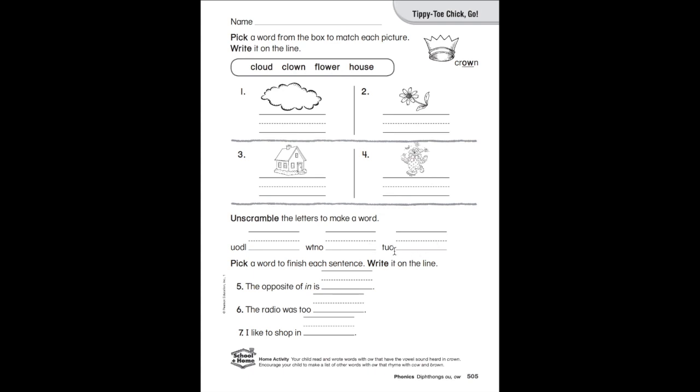O-U-T—I mean T-U-O, which is O-U-T backwards—O-U-T, out. Pick a word to finish each sentence, write it on the line. The opposite of in is out: O-U-T. The radio was too loud: L-O-U-D. I like to shop in town: T-O-W-N. All right, fantastic job everyone.